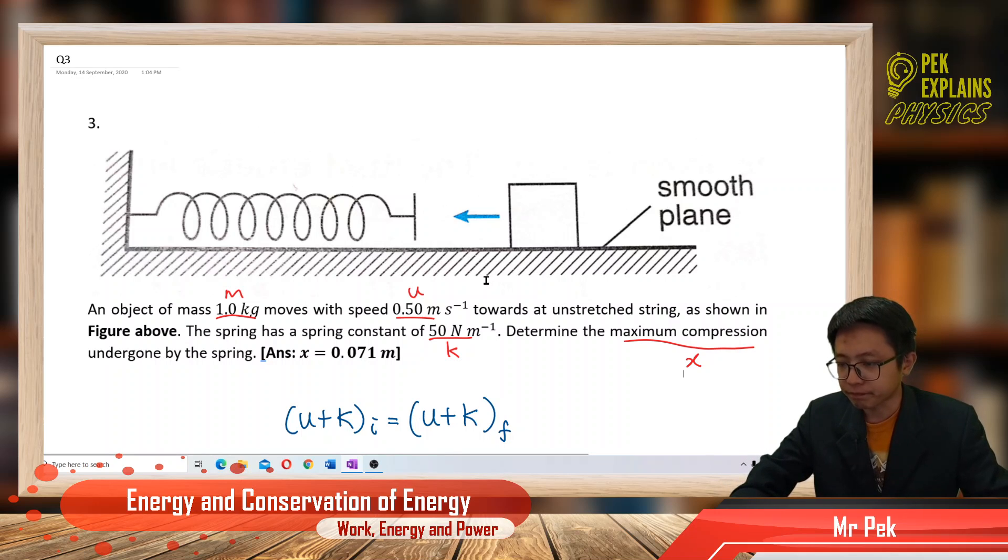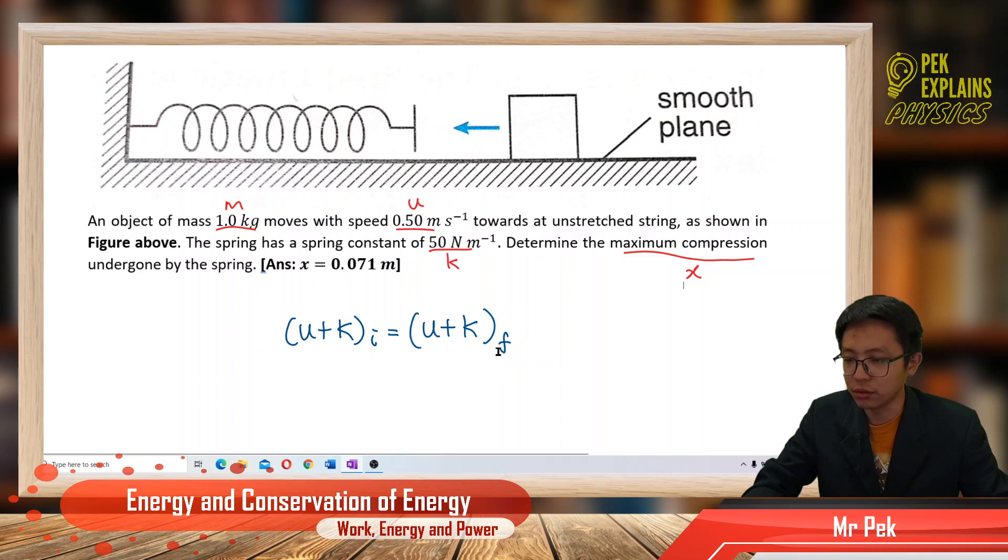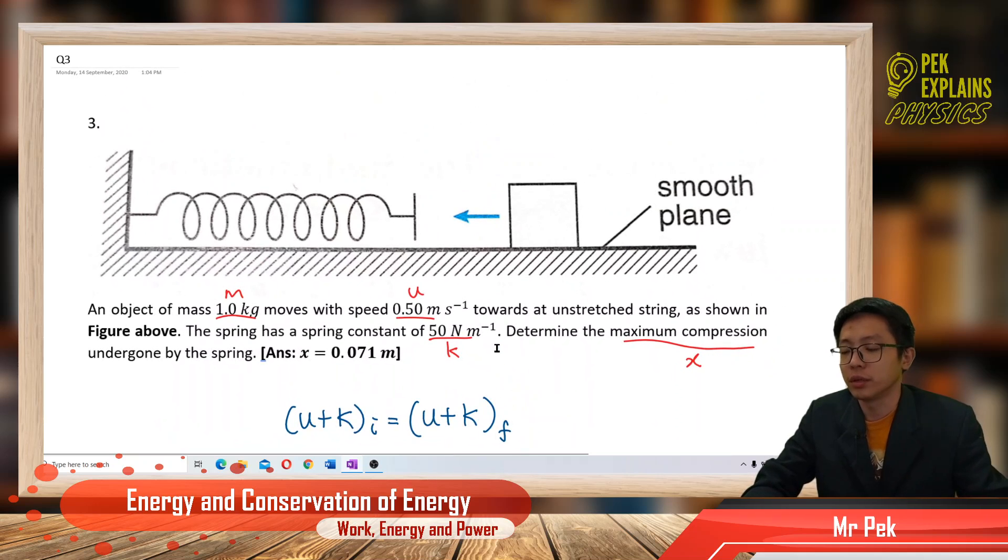Let's identify the energy that exists in the initial condition and the energy that exists in the final condition. We'll use the law of conservation of energy. Initially, what kind of energy does it have?